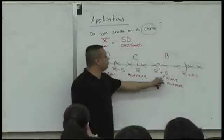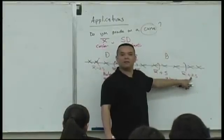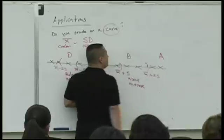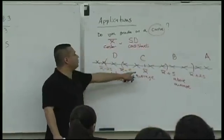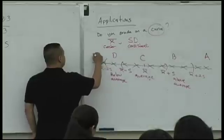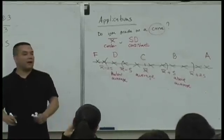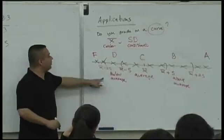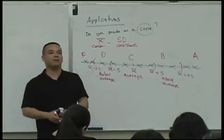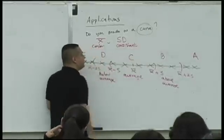If you score more than two standard deviations above the mean, that's pretty good — you get an A. And if you score more than two standard deviations below the mean, you get an F. This is what we call the curve — not those other alternate systems people describe.